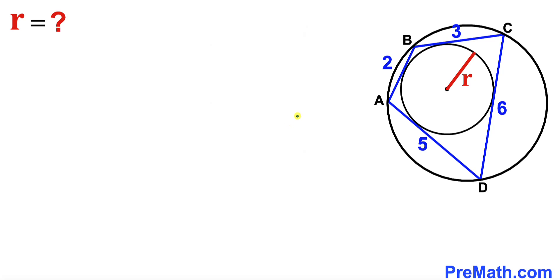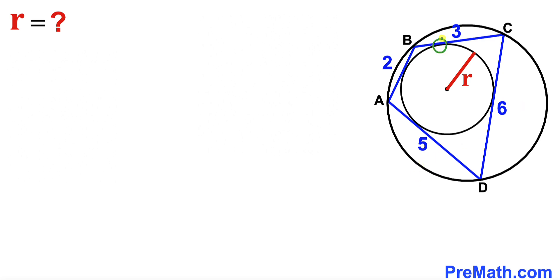Welcome to pre-math. In this video we have a small circle with radius lowercase r that is fully inscribed in a cyclic quadrilateral ABCD. The side lengths of this cyclic quadrilateral ABCD are 2, 3, 6, and 5 respectively.